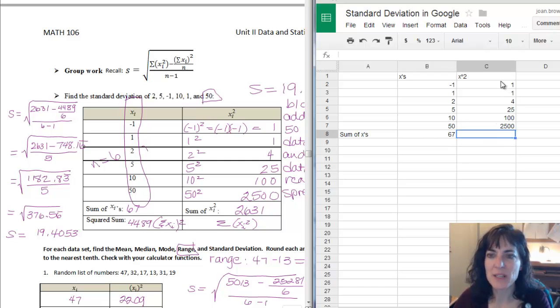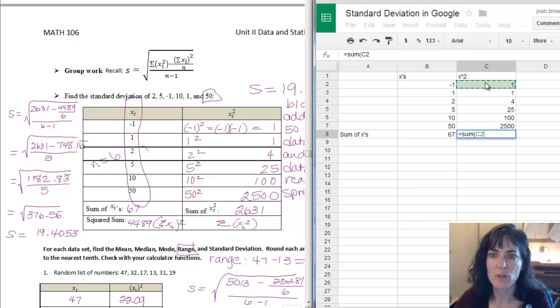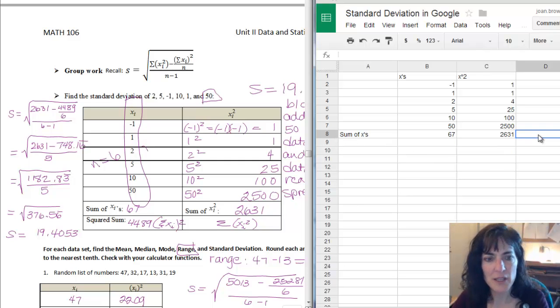Come back to this one. This time I want to do this whole column here. So I can start at the bottom and say equals sum left parenthesis. Go to my first data item. This time we'll try control shift, hold those both down while you push down the down arrow. And it selected them for me. And then right parenthesis and push enter, 2631. And I see over on my original table that matches. So I know I'm doing that correctly. And this one I'm just going to write next to it, this is the sum of x squareds this time.